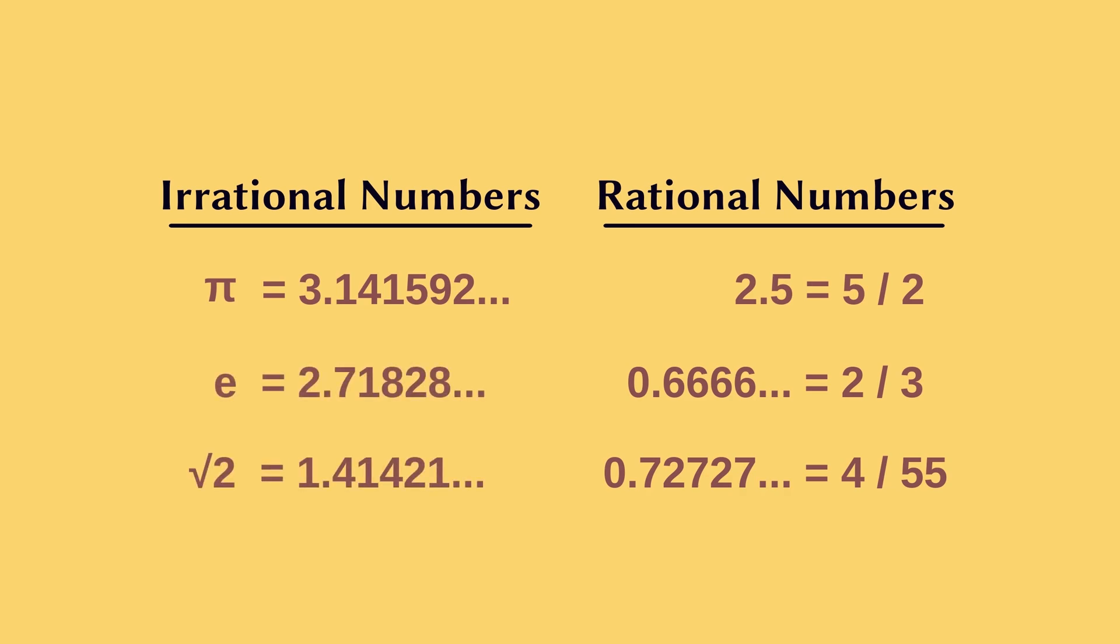From these examples you can find one more interesting property. Rational numbers when expressed as decimals either end at a particular number of digits after the decimal point or continue repeating a pattern like 0.6666. Whereas irrational numbers are never-ending decimal numbers with no repeating pattern.